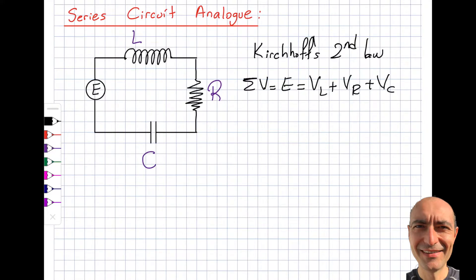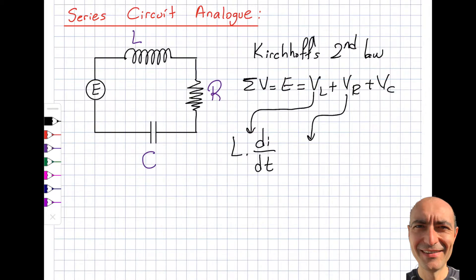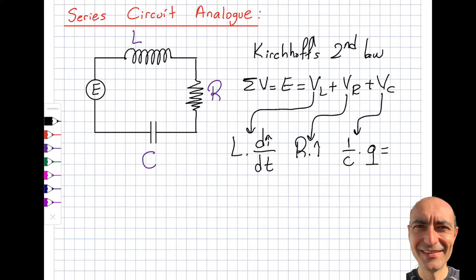L is the inductor. The definition of V_L is L times di/dt. The resistor voltage we know is R times the current I. And the capacitor voltage is 1 over C times the charge Q — not 9. So we will be equal to E as a function of time.